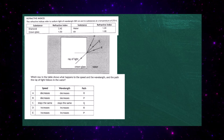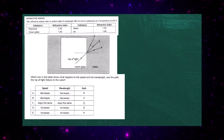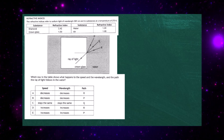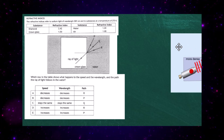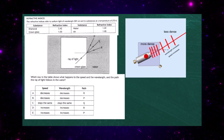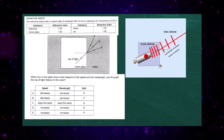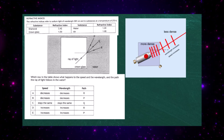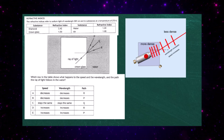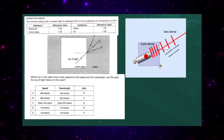So this ray of light is going from a more dense optical medium into a less dense optical medium. When that happens, there is an increase in wavelength, an increase in speed, and the ray of light bends away from the normal — which is the exact opposite of what happens when light goes from a less dense medium like air into a more dense medium like water.